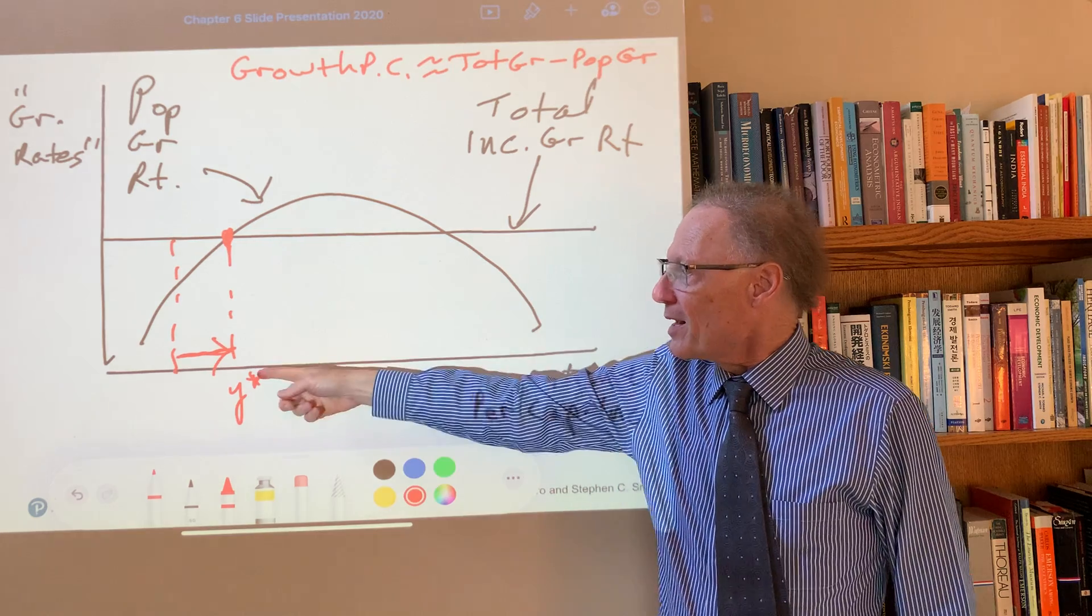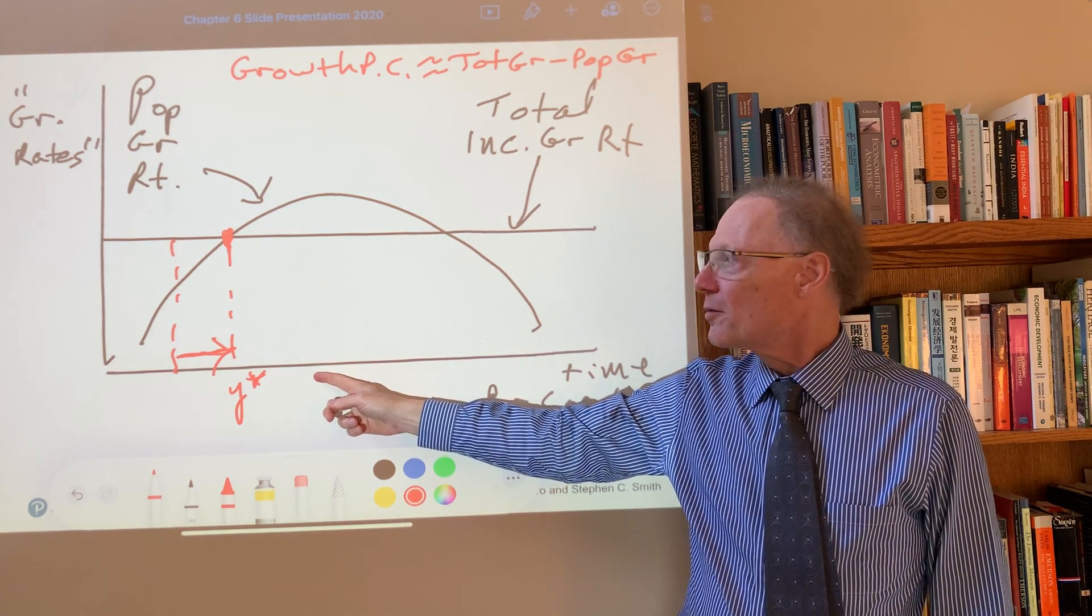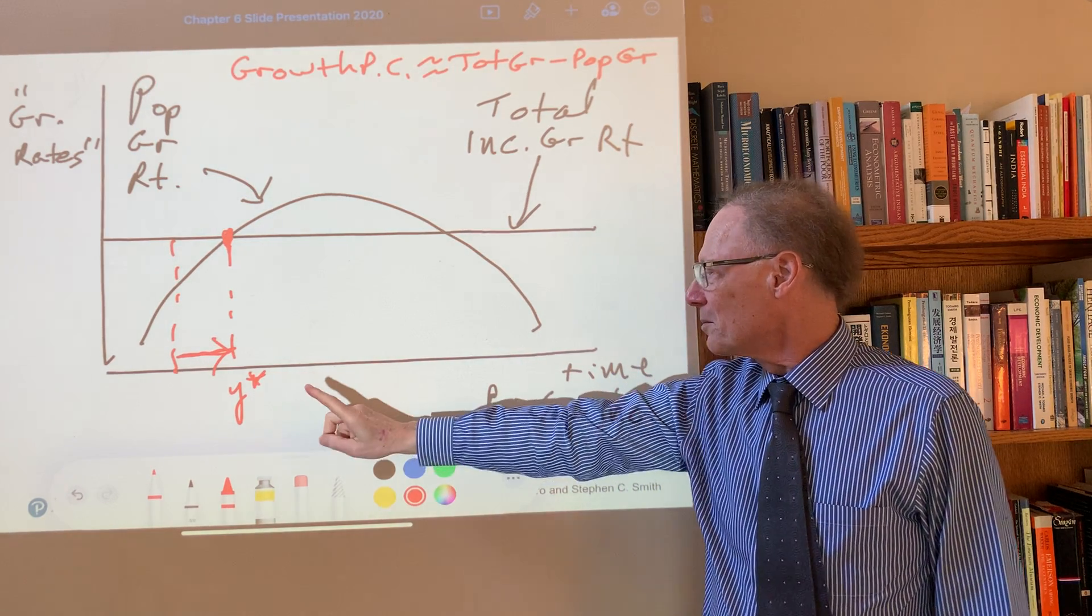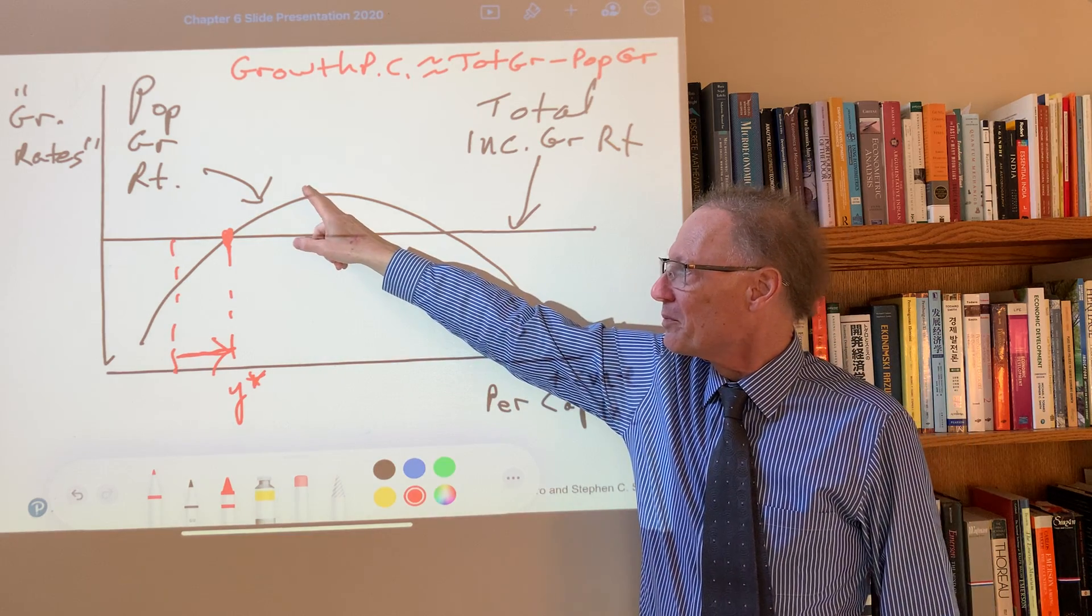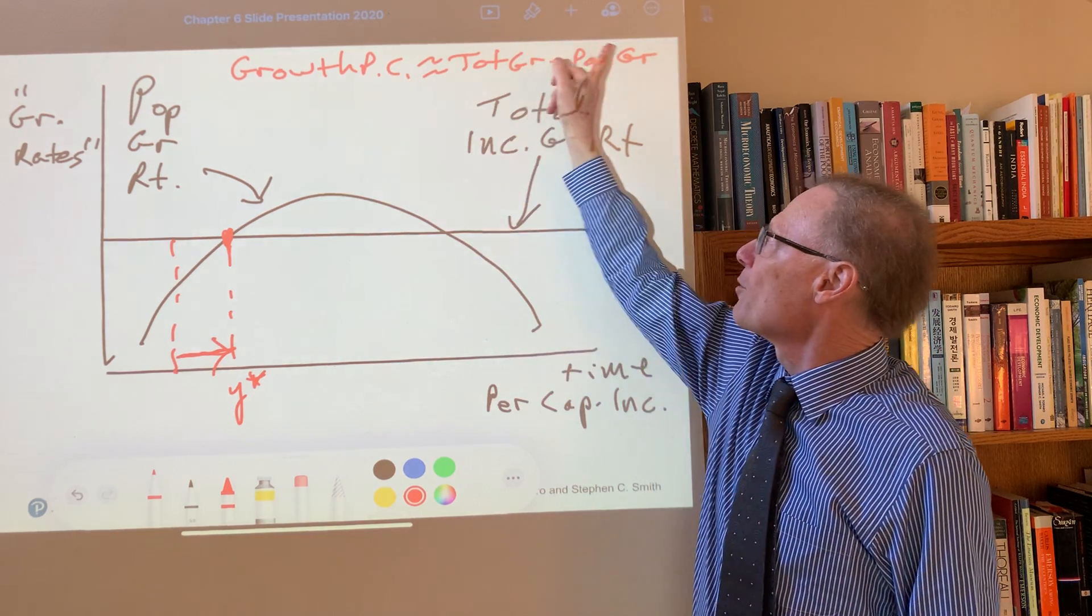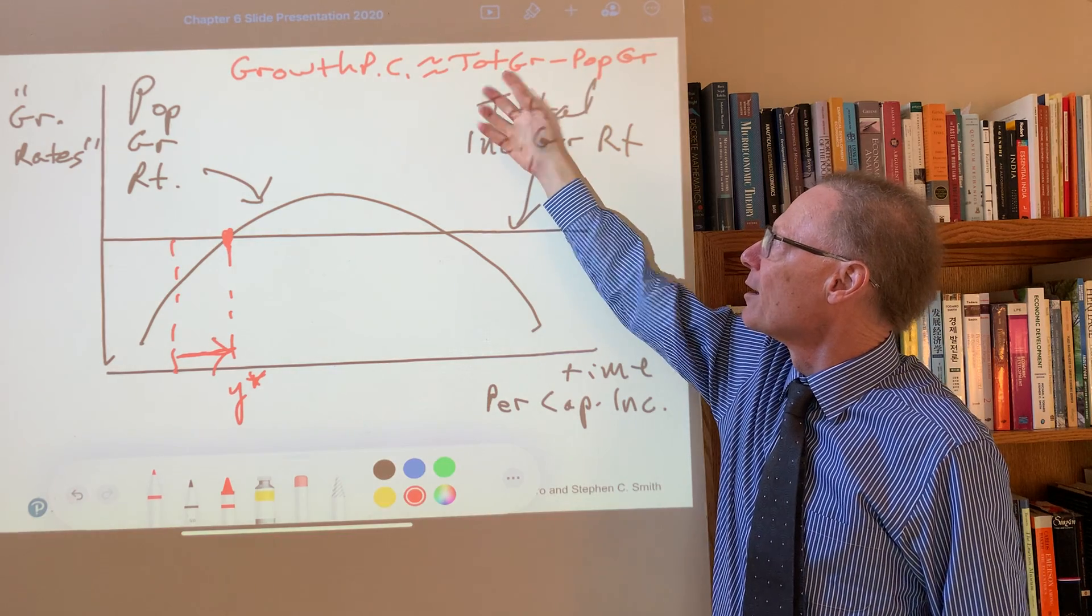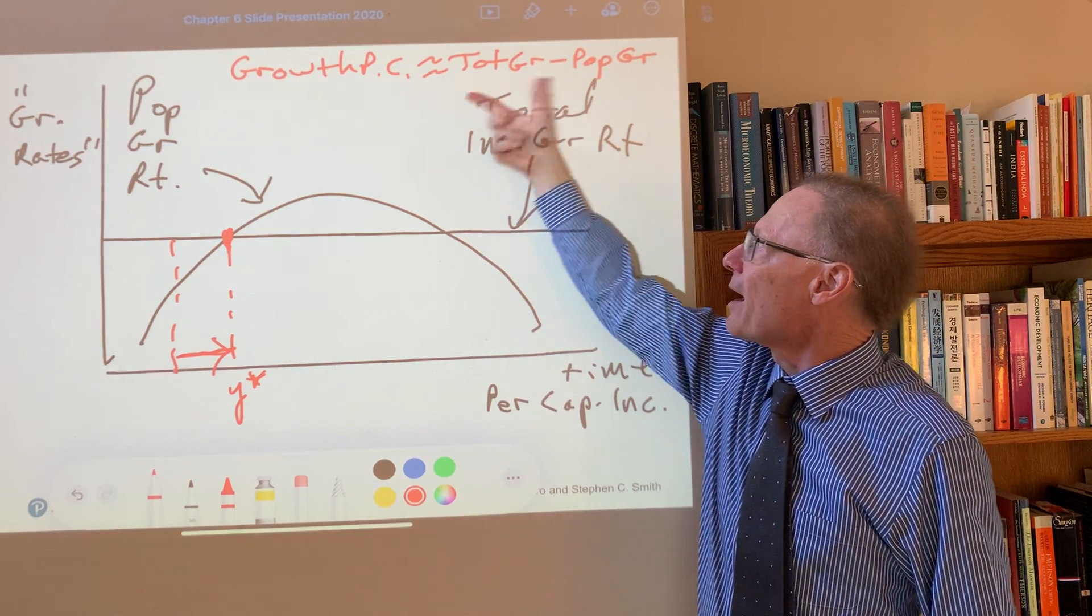On the other hand, at any higher level of per capita income, at this point, the population growth rate is greater than our total income growth rate, and so this is negative.